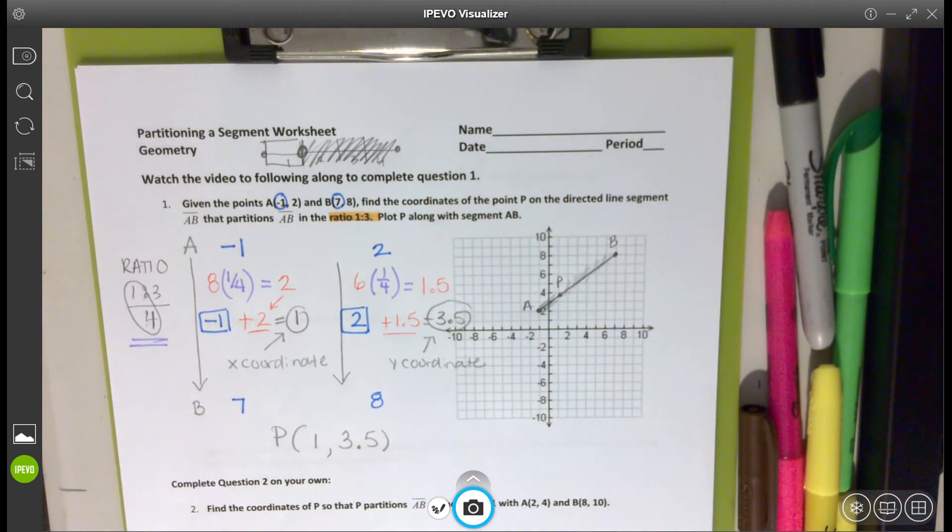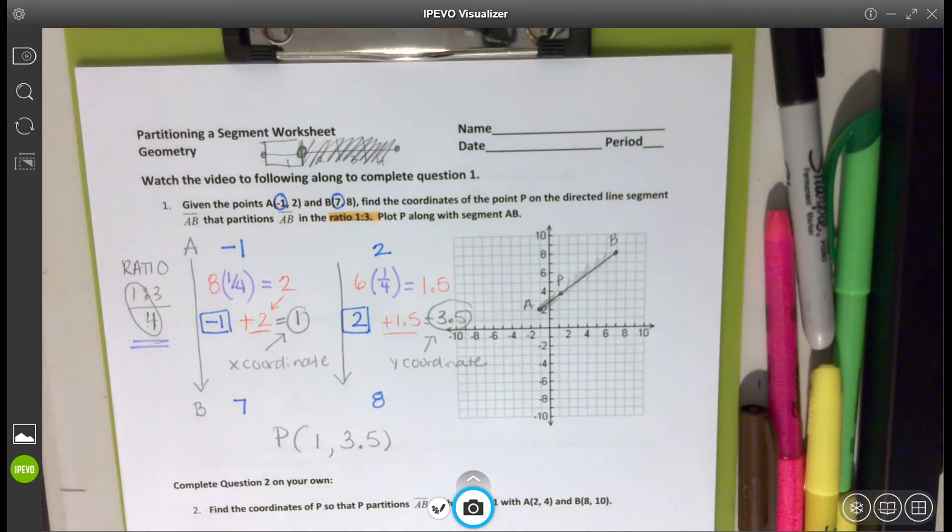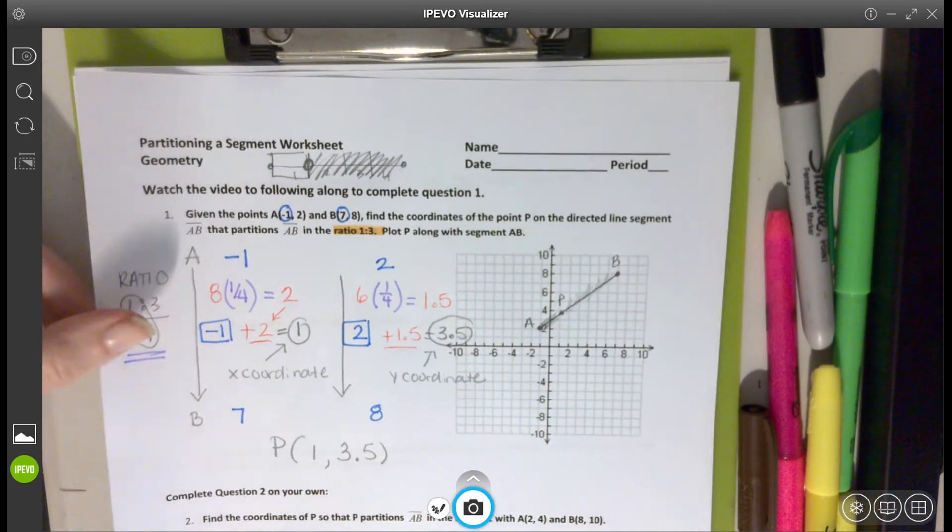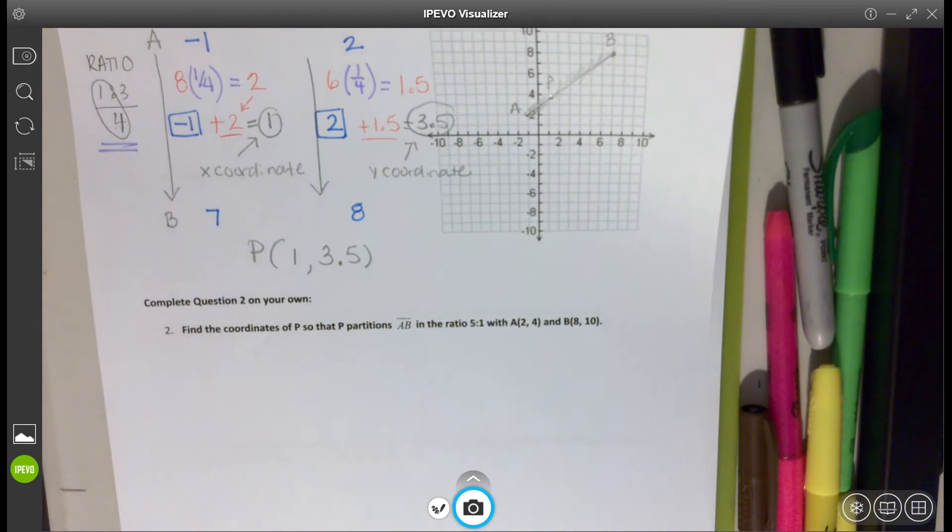All right, so I would like you to try number two on your own, so you can pause your screen, and then we'll go over it. All right, so let's look at number two. Number two says that we want to find point P on segment AB with a ratio of 5 to 1, and A is 2, 4, and B is 8, 10. All right, so first, my ratio.